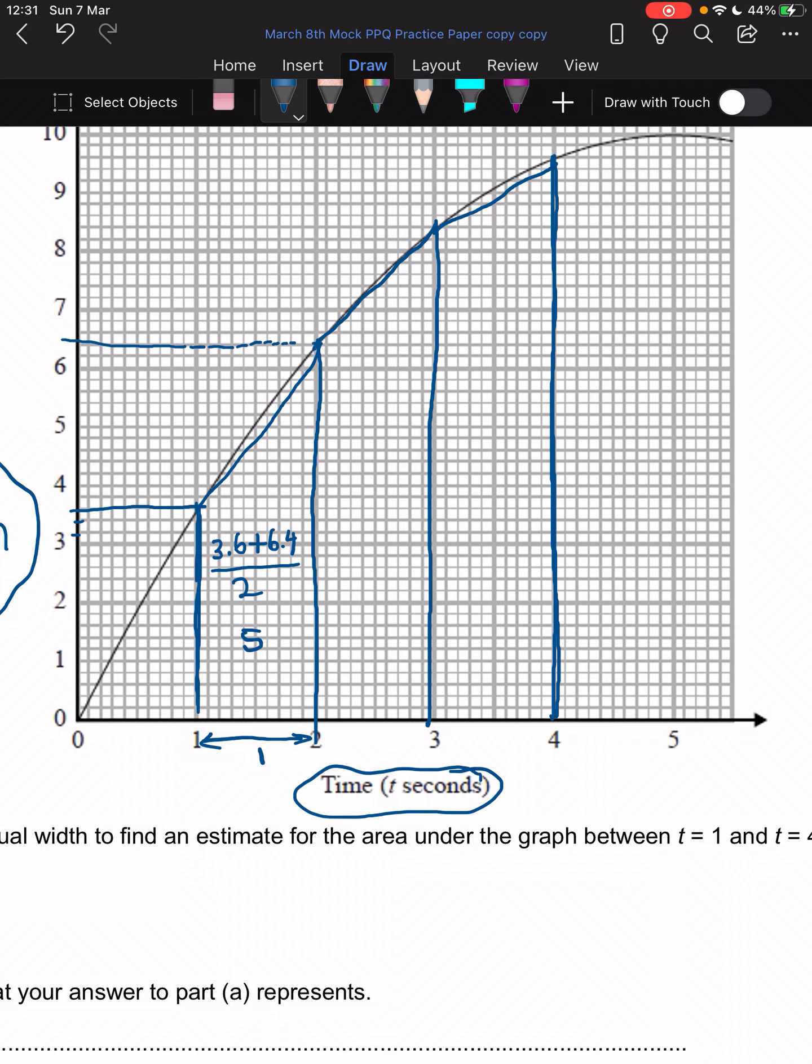Let's do the second trapezium. We've already got the first number, so that would be 6.4 plus this number here. Obviously in your question, you need to check what your graph goes up in. This looks like an 8.4, divided by 2. Again the height is one, so I'm not going to worry about that. So 6.4 plus 8.4 and divide that by 2.